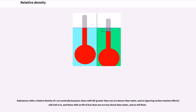Substances with a relative density of one are neutrally buoyant; those with RD greater than one are denser than water and will sink in it; and those with RD less than one are less dense than water and so will float.